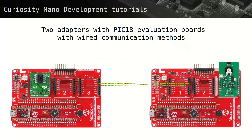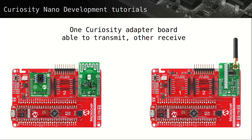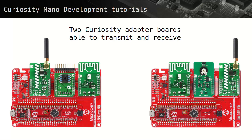Then there are tutorials featuring two Curiosity Nano adapters, each with a PIC 18 evaluation board installed, with wired communications and data transfer. Here, radio frequency on-off keying transmitter and receiver click boards are installed, offering one-way wireless connectivity and data transfer. Here, both RF on-off keying transmitter and receiver clicks are installed on each Curiosity Nano adapter, allowing wireless two-way data transfer.